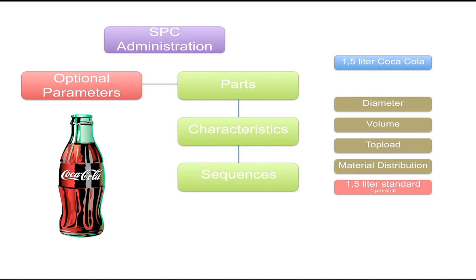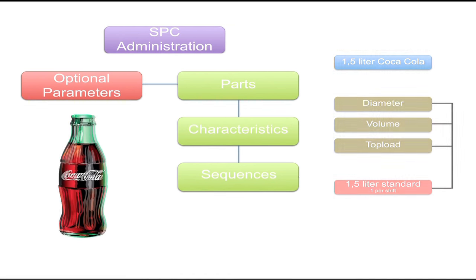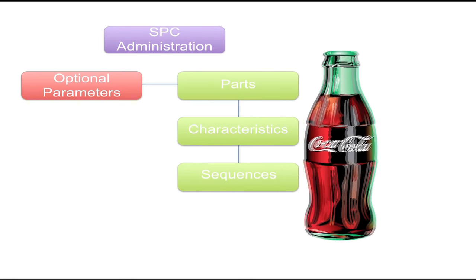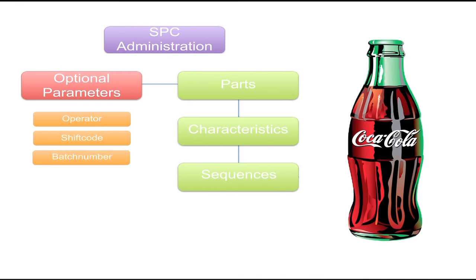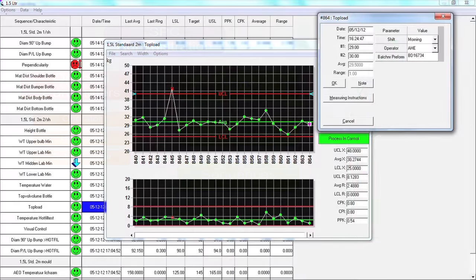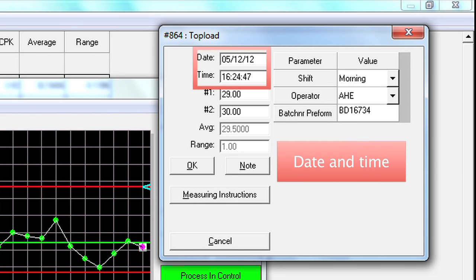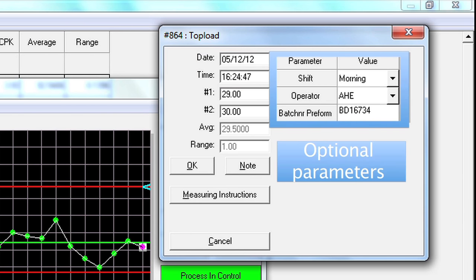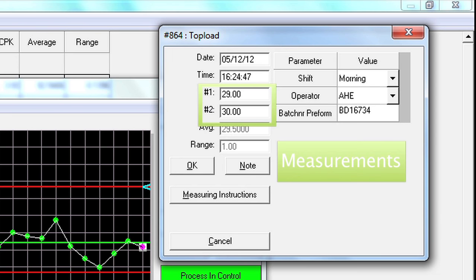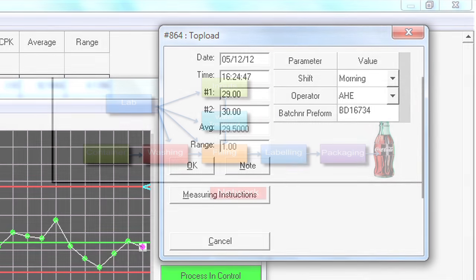A selection of characteristics will be assigned to the sequence. In this example, diameter, volume, and top load must be measured once per shift and will be assigned to the sequence. Optional parameters are defined such as operator, shift code, and batch number, and these parameters are assigned to the part file. In the data entry screen, all this required information comes together. We see the date and time of the measurement, the optional parameters, and the required measurements.